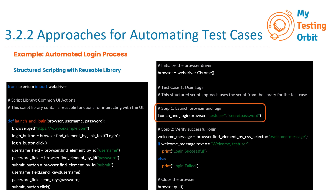Next, look at the part of the script that executes the test case. It calls the 'launch_and_login' function with the specified username and password to perform the login process. The next steps are the same as before. The key difference is that we have created a function named 'launch_and_login', so whenever you need to perform a login action in different test scripts, you do not have to rewrite the same sequence of login steps each time like in linear scripting — you can simply call the 'launch_and_login' function.